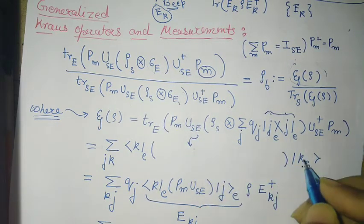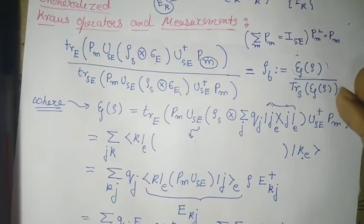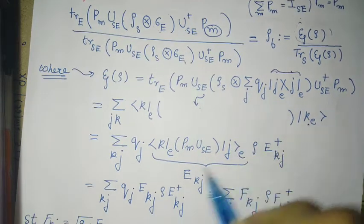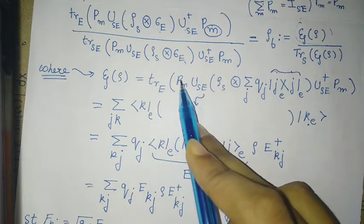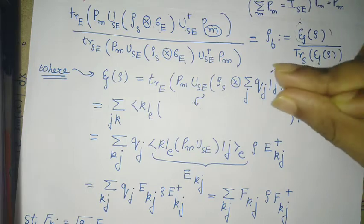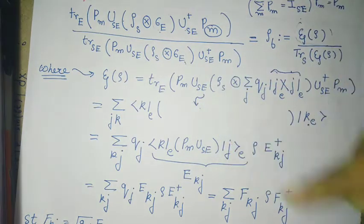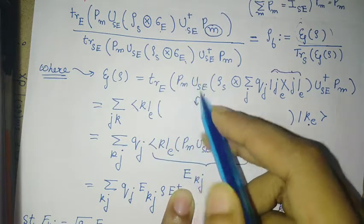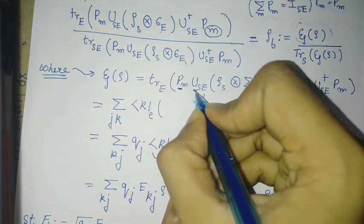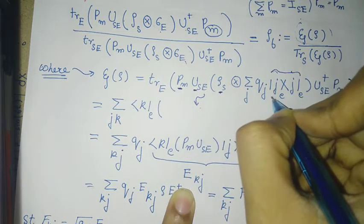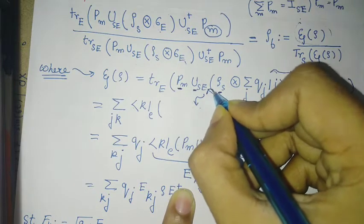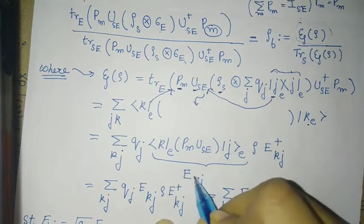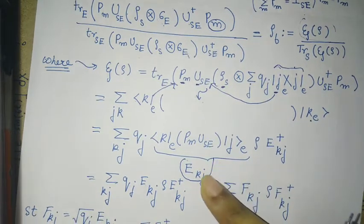Indices j and k can be the same or different — it won't matter; they just need to be an orthogonal set of bases. From here, what we do is squeeze both sides with |k_e⟩. You can see that |k_e⟩ comes from this side and directly hits this part. Since Pₘ belongs to the system-environment part, U_SE belongs to the system-environment part, and ρ only has a system part — from this side j directly hits this part, and from this side k directly hits this part. That gives the new Kraus operator relation.